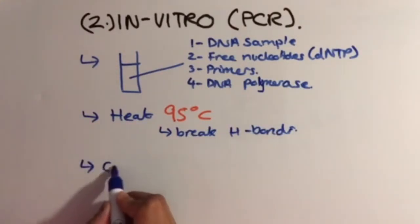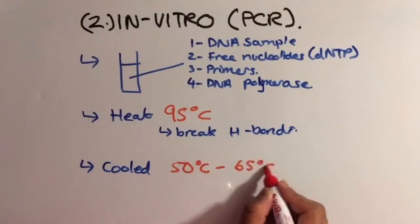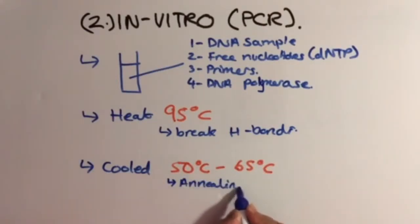The mixture is then cooled to between 50 and 65 degrees Celsius so that the primers can anneal to the strands and begin replication.